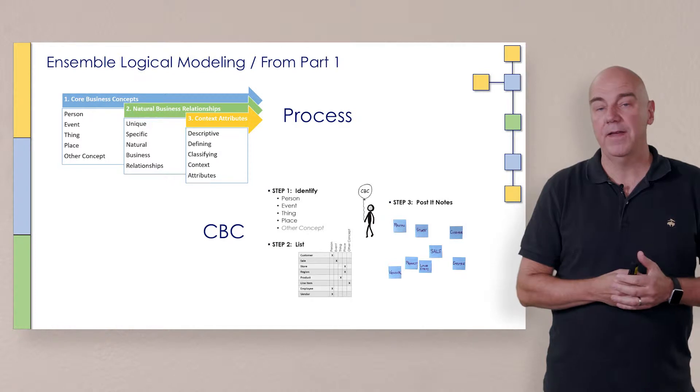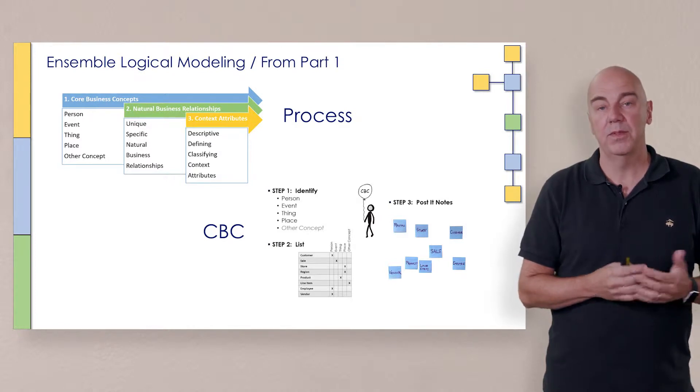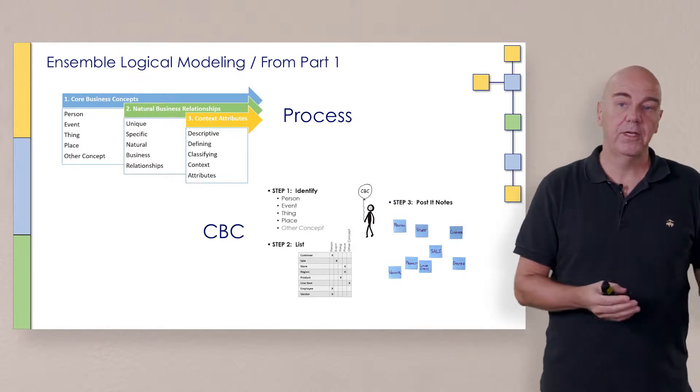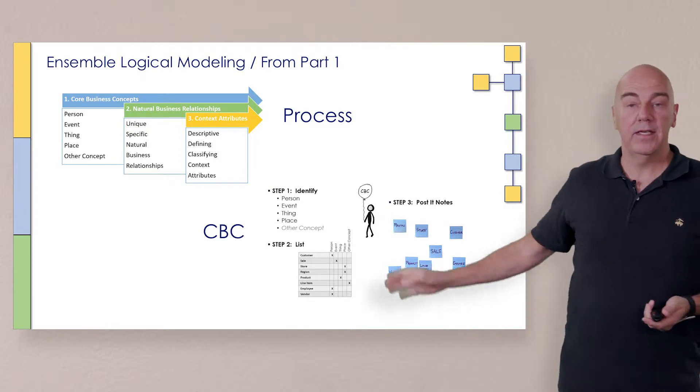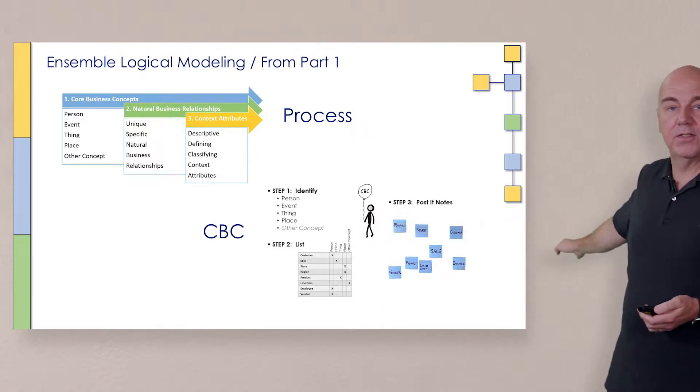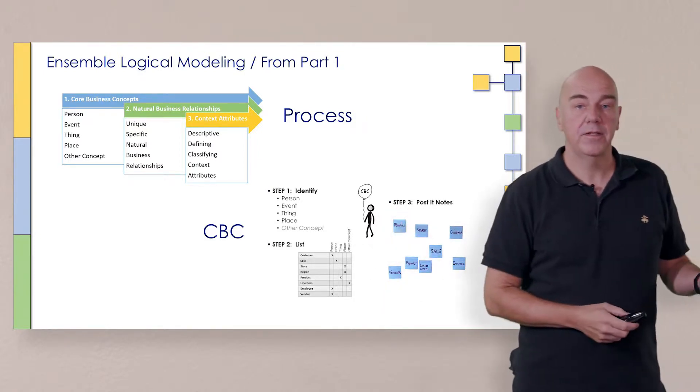we got to the point where we hit the first step in the process, which is identify those core business concepts: a person, place, thing, event, other concepts that the business works with. We did that through an interactive workshop, and then we ended up distilling this down into a model. Let's go ahead and take a look at that on the board.